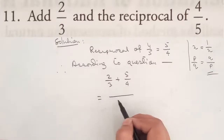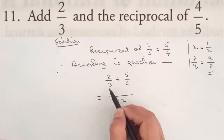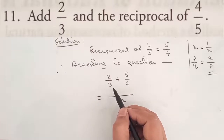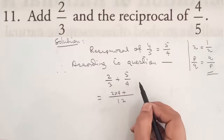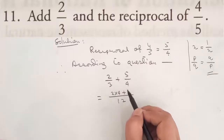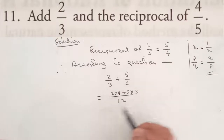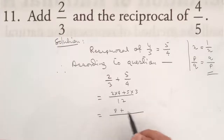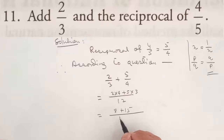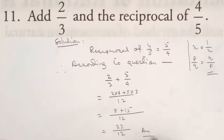The LCM of 3 and 4 is 12. So we write 2 into 4 plus 5 into 3 over 12, which gives 8 plus 15 divided by 12. Therefore, the final answer is 23 by 12.